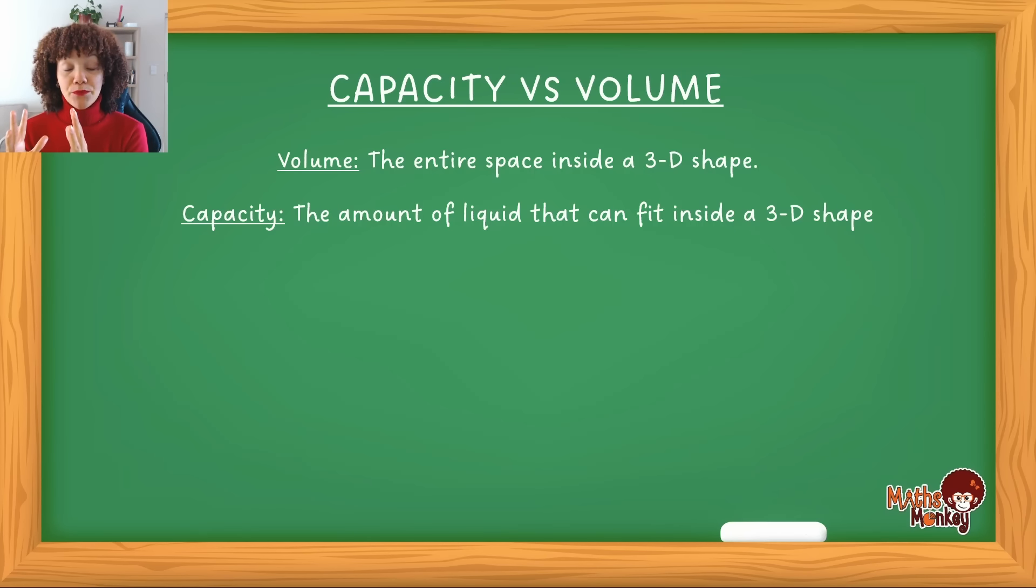Perimeter is looking at the outside sides of a two-dimensional shape and area is the entire space of the inside of that two-dimensional shape. And then when we move to surface area, we're looking at the outside sides, which is the surface area, the surfaces, and then the volume is the inside of three-dimensional shapes.